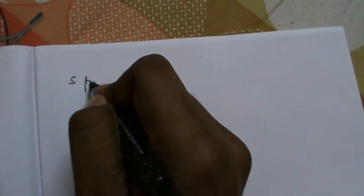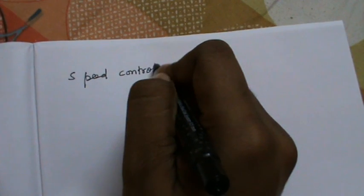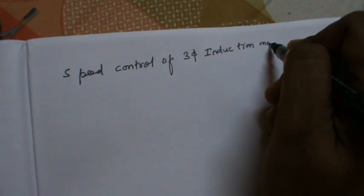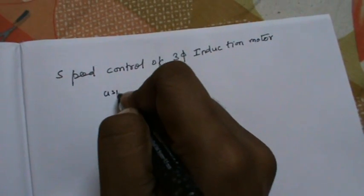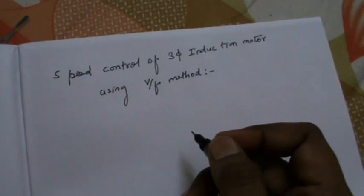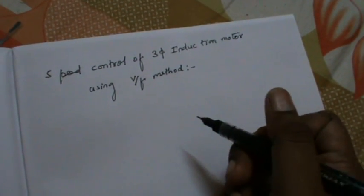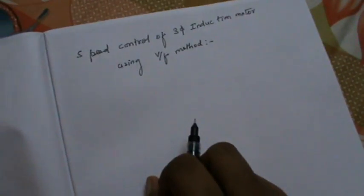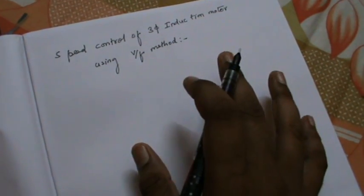Hi friends, this is Ashutosh Mahanthi and I will give you a short lecture on the V by F method, which is used for speed control of a three-phase induction motor. In this lecture I will also give you some real practical data obtained from an experiment on this topic. First, I will give you a brief theory about what happens in this variable frequency method.